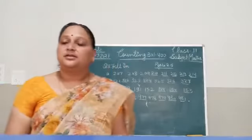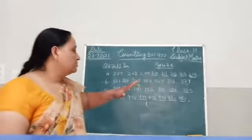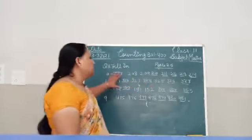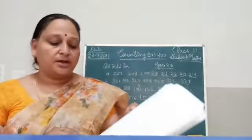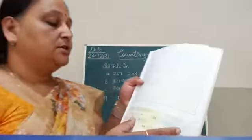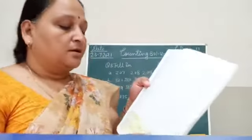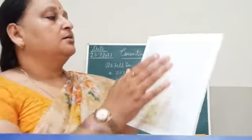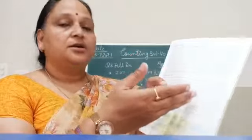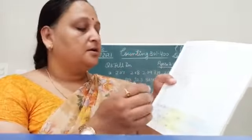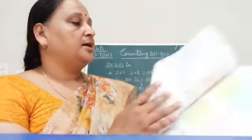So the task is to fill in the missing numbers and complete the series. It is question number 3 of page number 25. Do it in the book only. Write the counting 300 to 400.